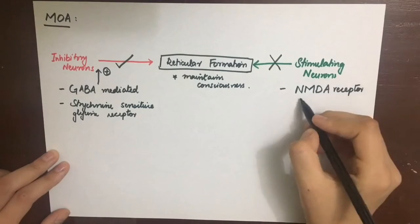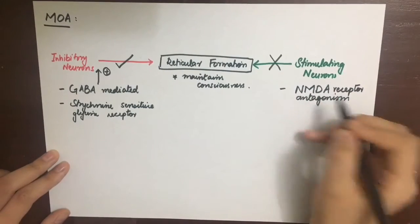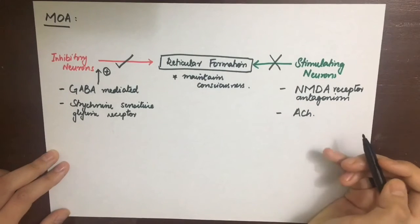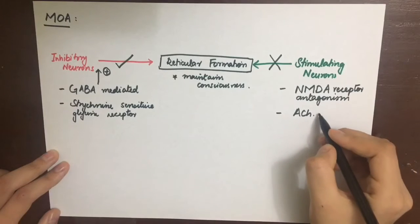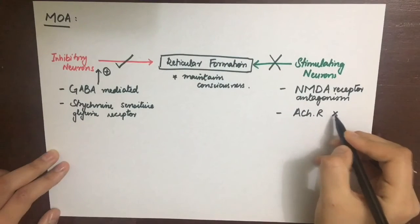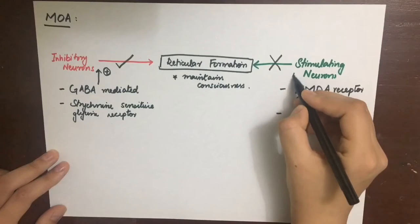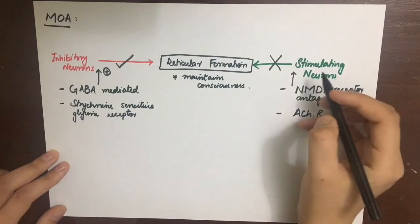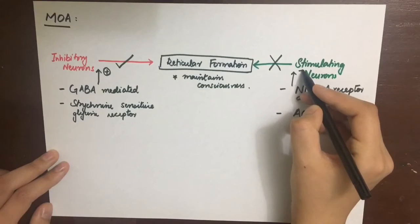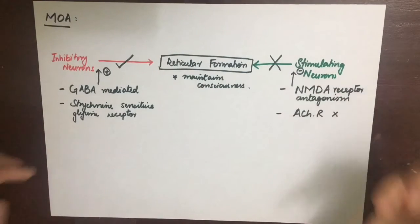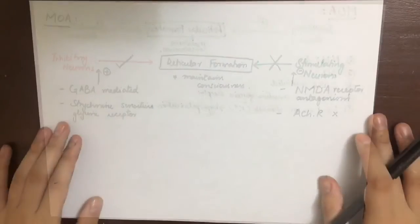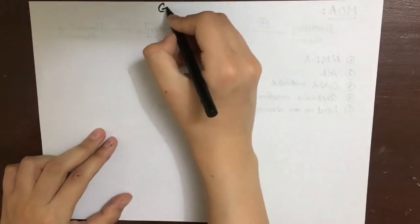Secondly, what we can do is to inhibit the stimulatory neurons. We do this by basically inhibiting the NMDA receptor which is basically a glutamate receptor and glutamate is an excitatory neurotransmitter. The chief general anesthetics that act by this pathway are nitrous oxide, ketamine, and halogenated anesthetics. Secondly, we can also inhibit the acetylcholine which is also an excitatory neurotransmitter by halogenated anesthetics.